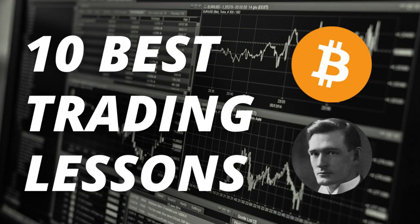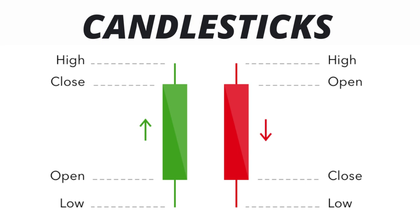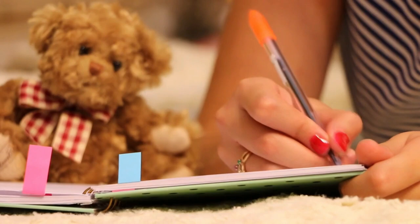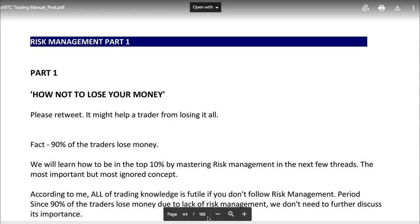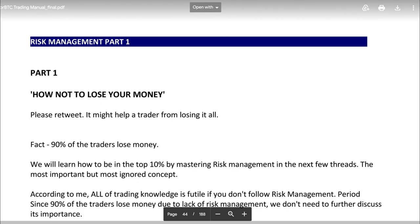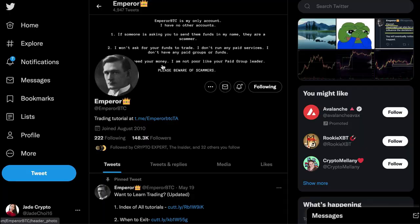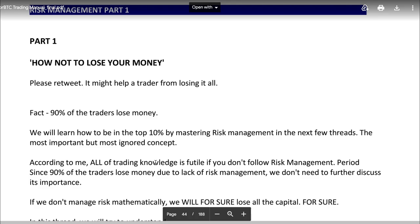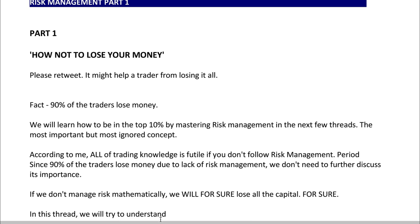In the previous video we talked about the 10 best trading lessons, the basics of candlesticks, and how to use support and resistance in trading. We're going to keep studying this 180-page trading manual together. In this video we're going to talk about risk management — probably the most important thing in trading — so how to not lose your money. The author, a very famous trader known as Pearl BTC, says that 90% of traders lose money.